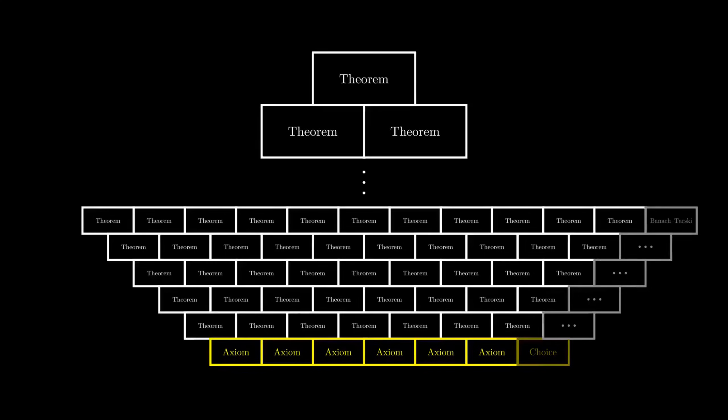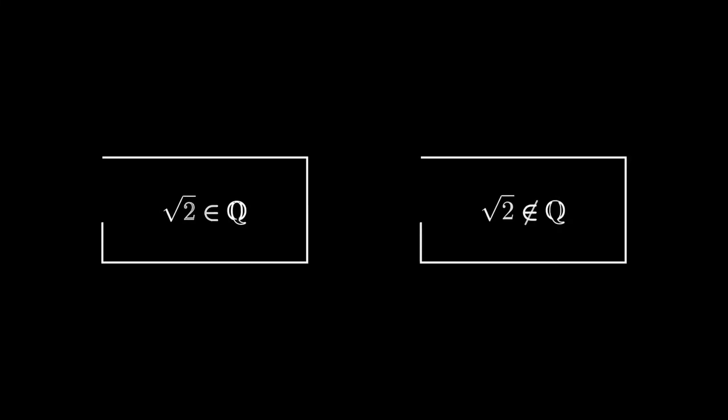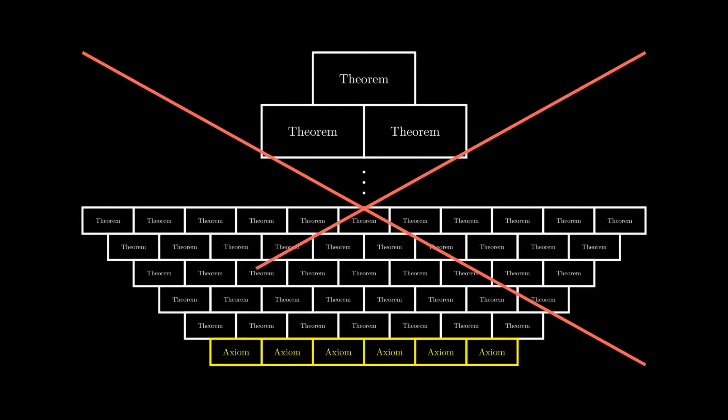The only thing we must avoid is to have a set of axioms that would allow two contradictory theorems to be true at the same time. If that happens, everything falls apart.